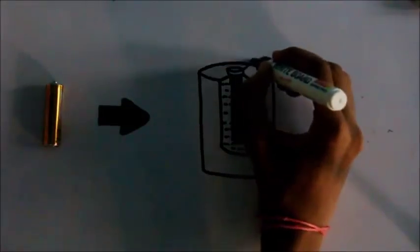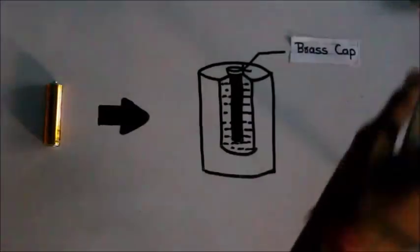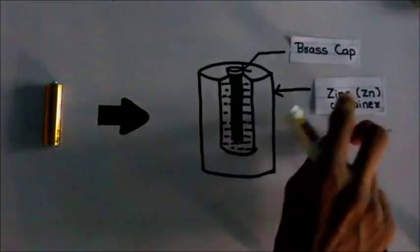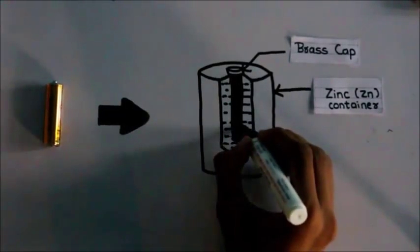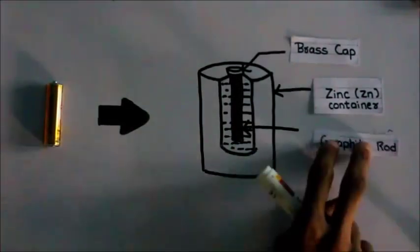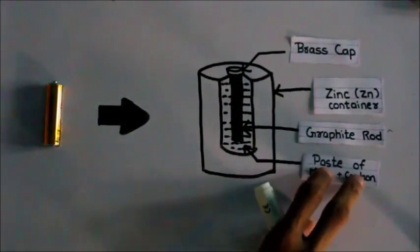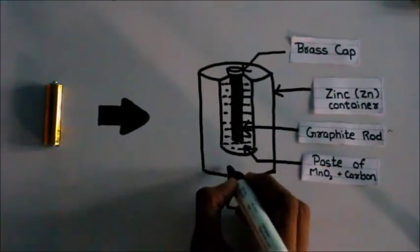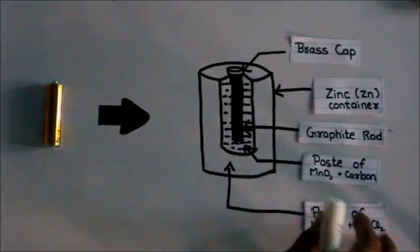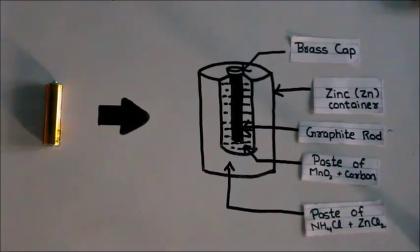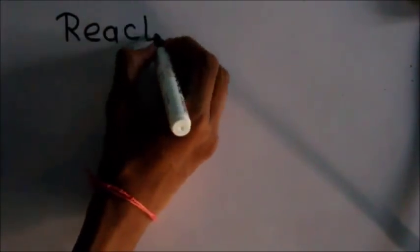On the top of the dry cell, there is a small cap made up of brass, and the dry cell container is made up of zinc. Inside, there is a small graphite rod which is surrounded by a paste of MnO2 and carbon. Outside, there is a paste of NH4Cl and ZnCl2. The reactions involved in a dry cell are of two types: oxidation reaction and reduction reaction.